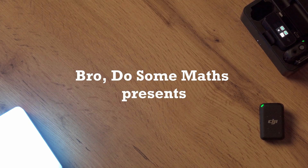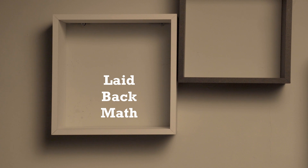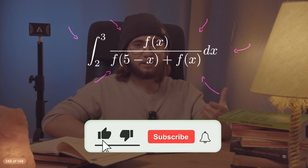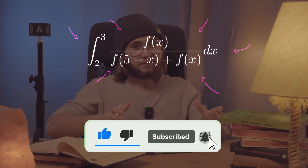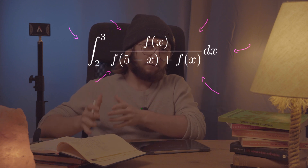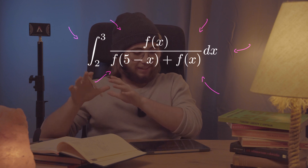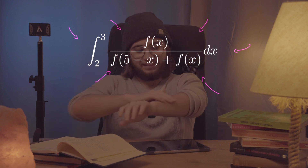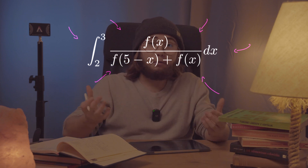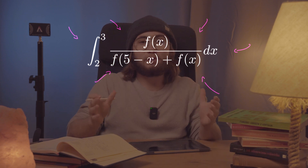Today we're going to be integrating not knowing what we're integrating. We are supposed to evaluate the integral from two to three of f of x over f of five minus x plus f of x dx — not knowing what f of x is. That's going to be really funny. So how are we supposed to solve this problem when we don't even know what we are integrating?